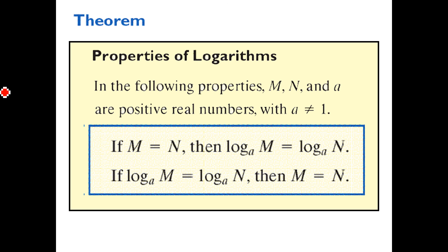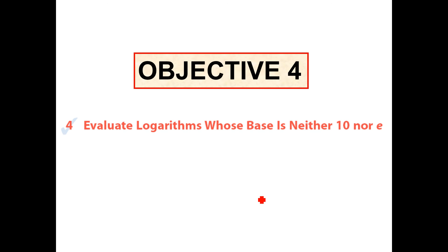So properties of logarithm. Just one extra one to throw in there. If m equals n then the log of the same base of m and n are going to be the same thing. And go in the other direction. If log a of m equals log a of n then we know m and n are equal to each other. Doesn't come up a lot but good to know.